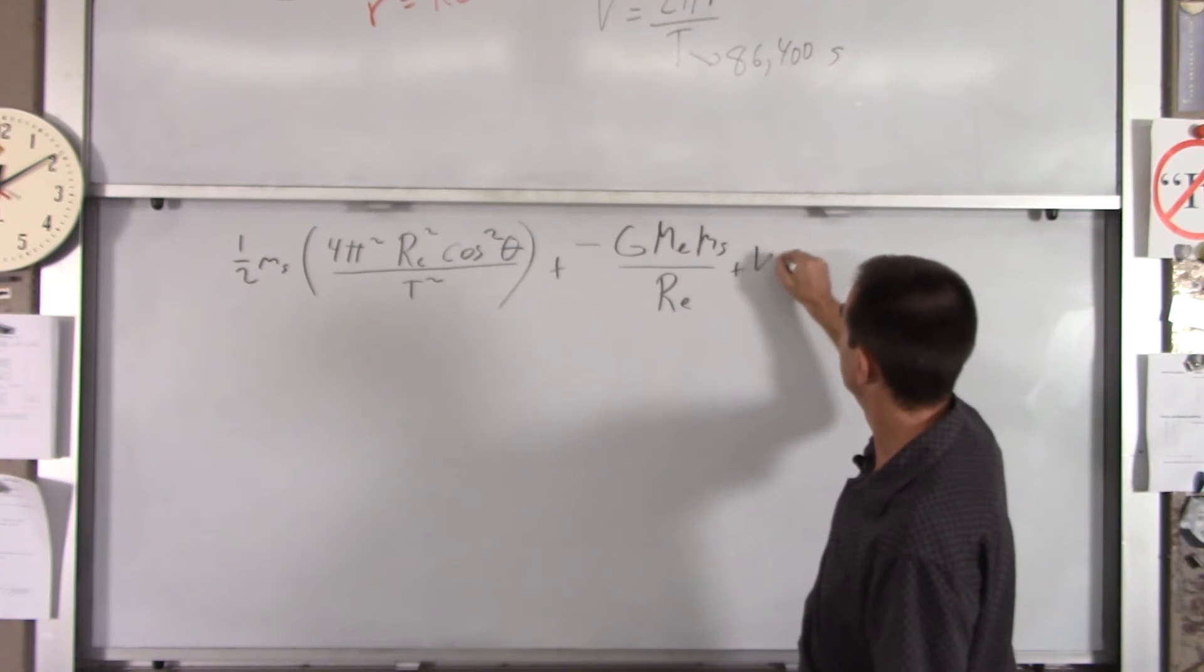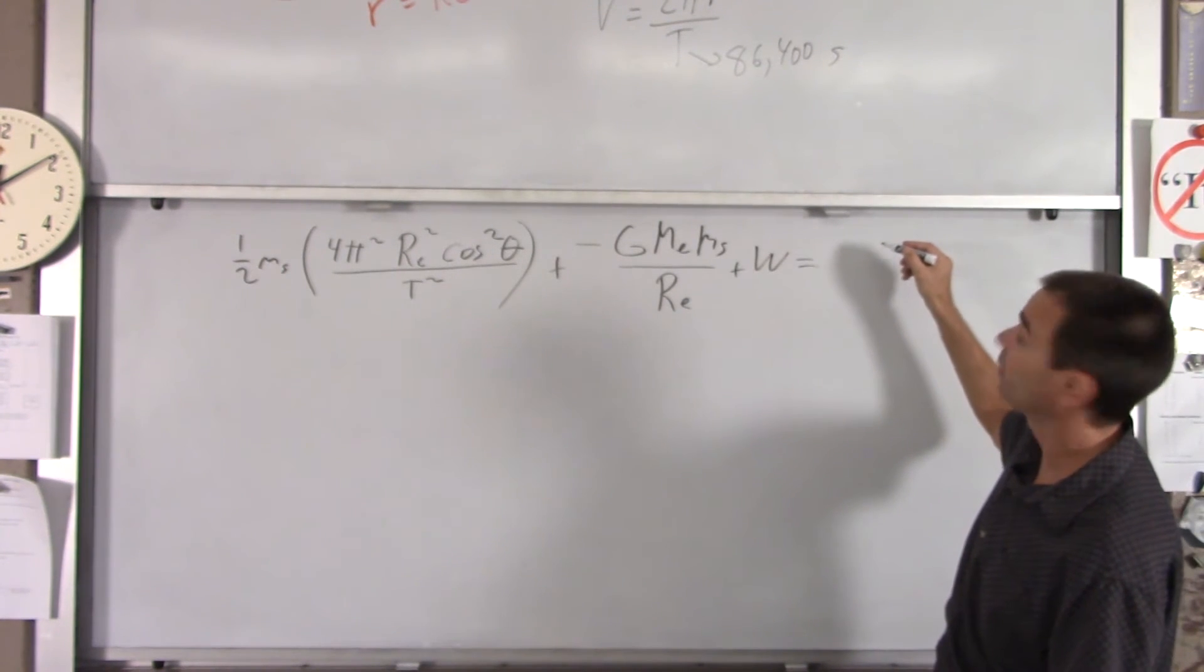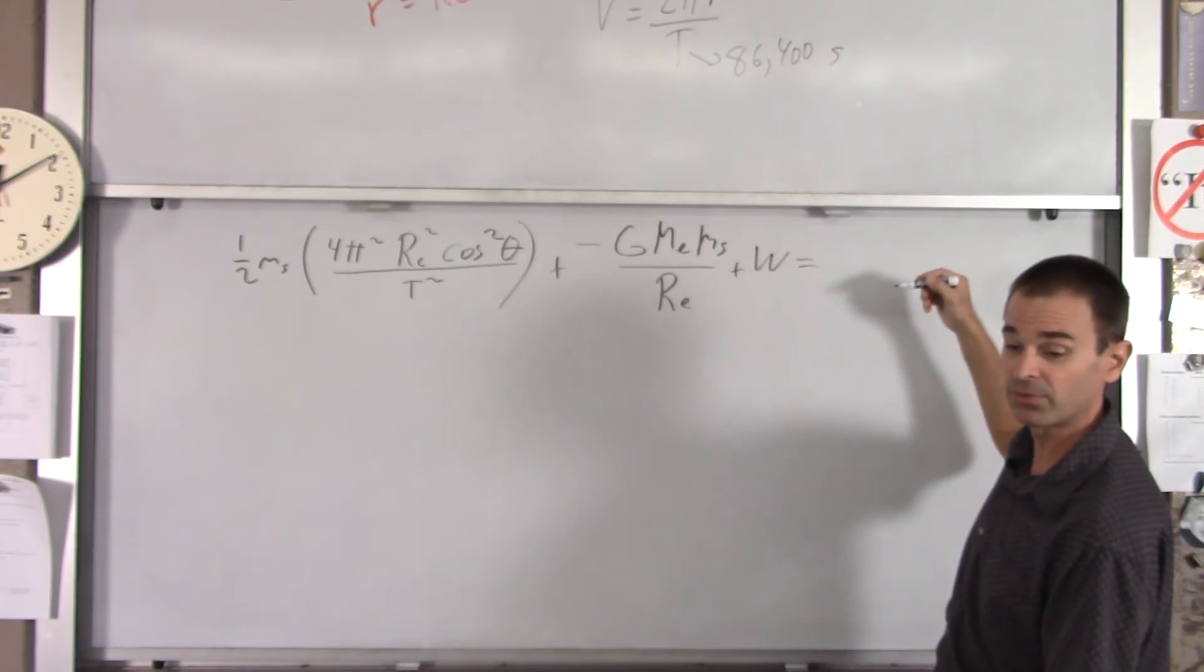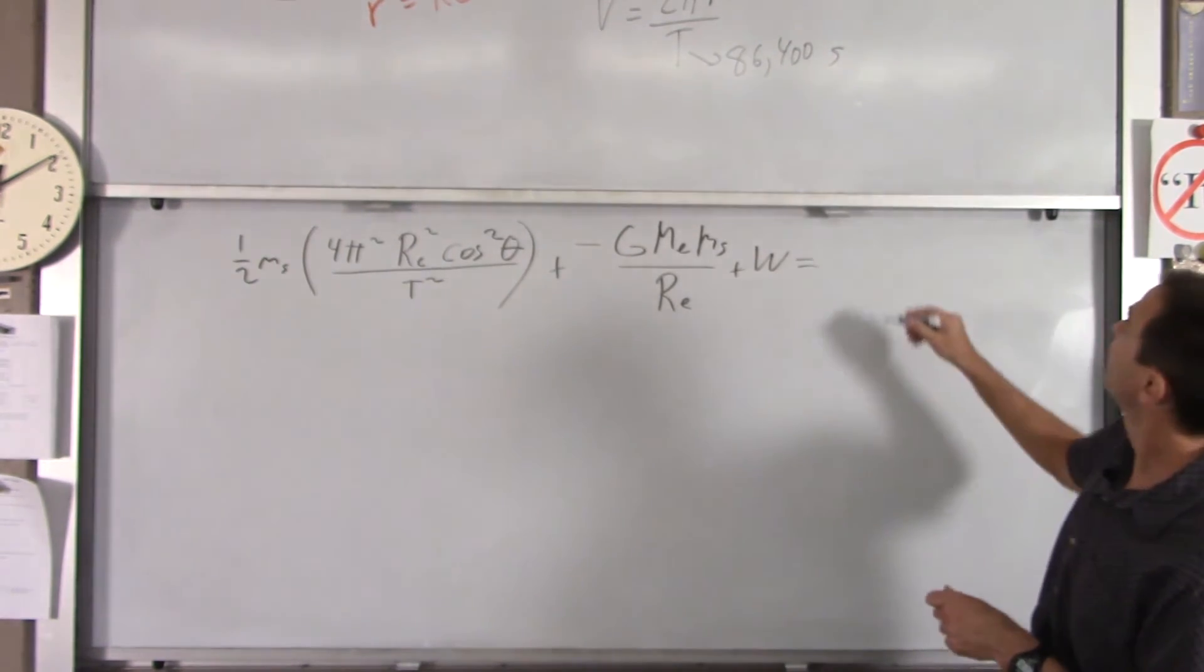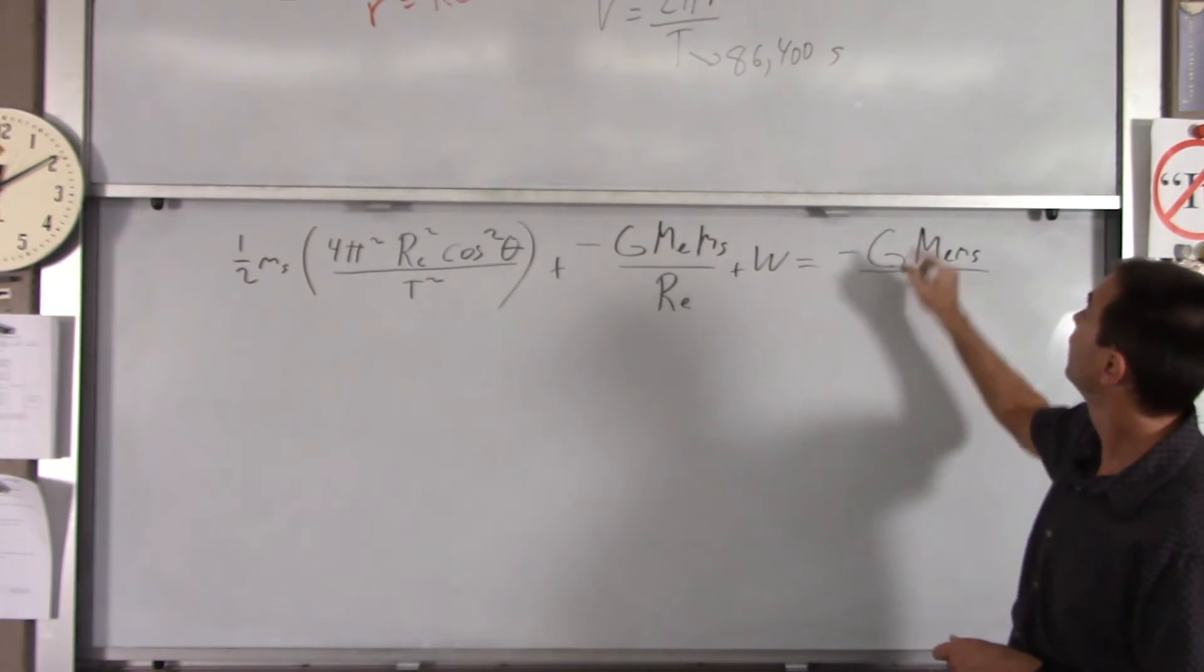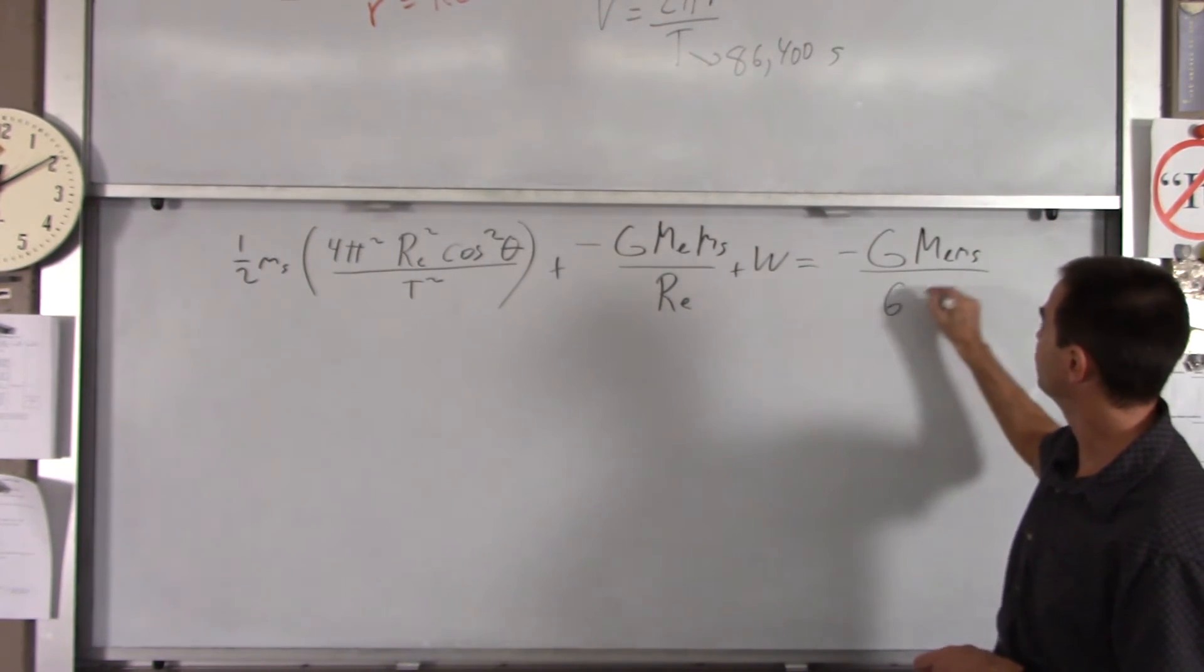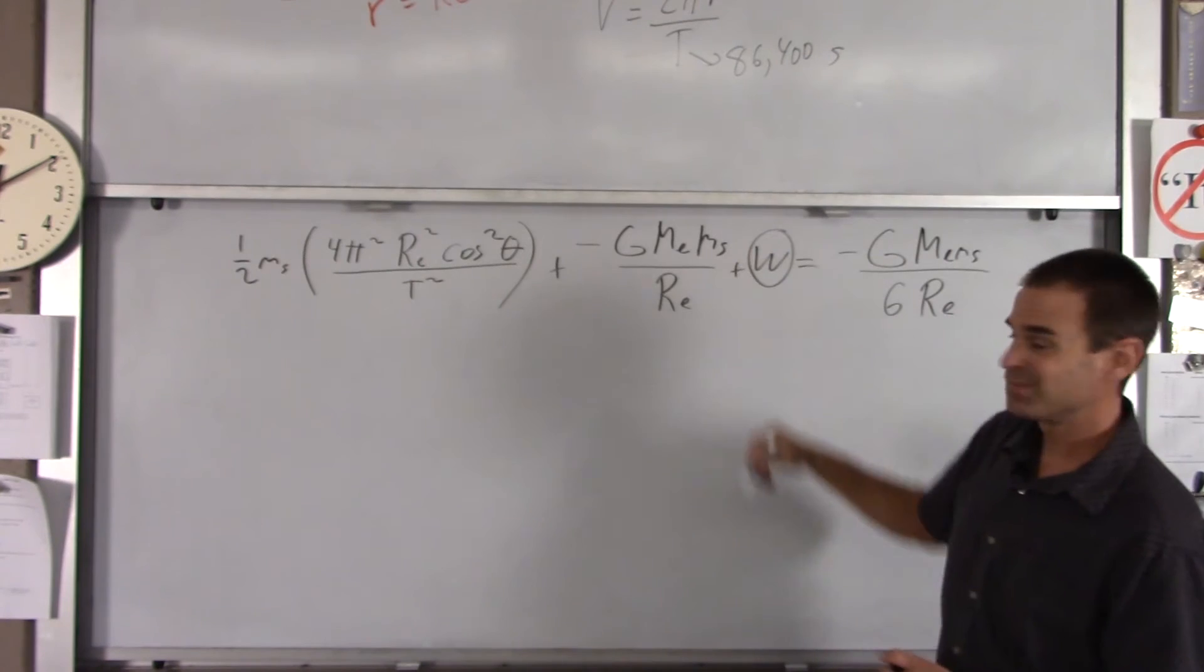That's the potential energy at the beginning, plus w equals, at the end, we said that both the kinetic and potential, when you add them together for a circular orbit, but only for a circular orbit, is negative G mass of the Earth, mass of the ship over, I'll take the 2 times the 3, you get 6 Re. And we're solving for w.